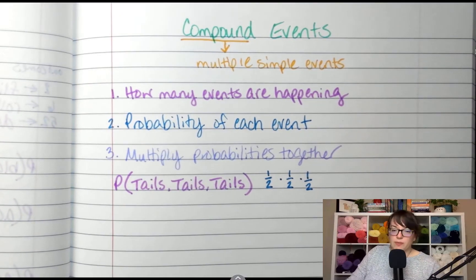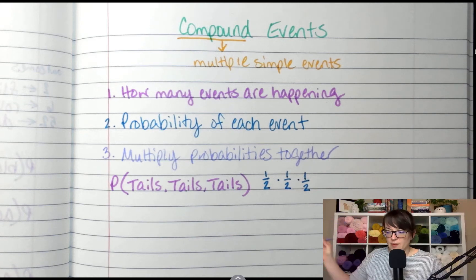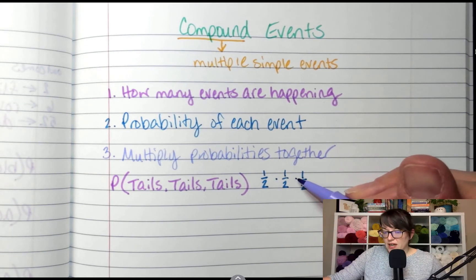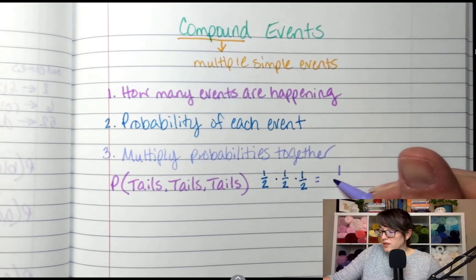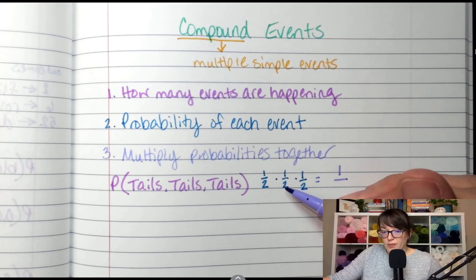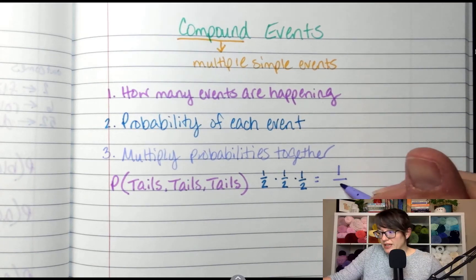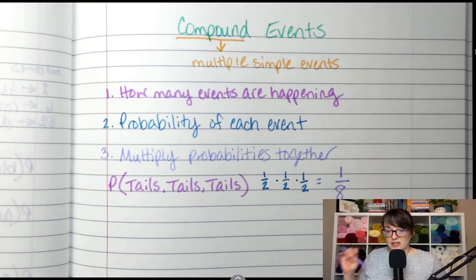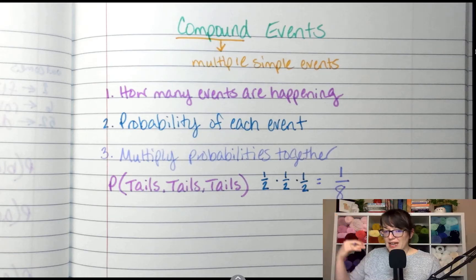And when we multiply fractions, we do top times top times top. So one times one times one is one, two times two times two is eight. So the chances that I flip a coin three times and it lands on tails all three times is one in eight.